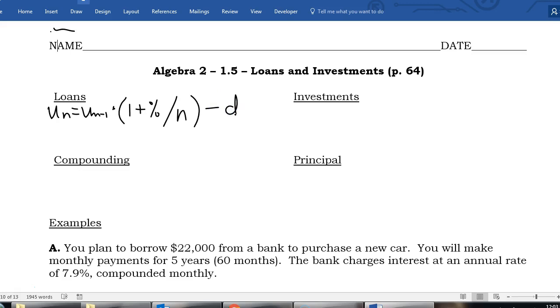An investment looks almost exactly the same. We're going to start with our u sub n equals u sub n minus one just like we usually do and we're going to again multiply by one plus whatever our annual percent rate is divided by our number of compoundings per year and in this situation we're going to add our deposit amount.